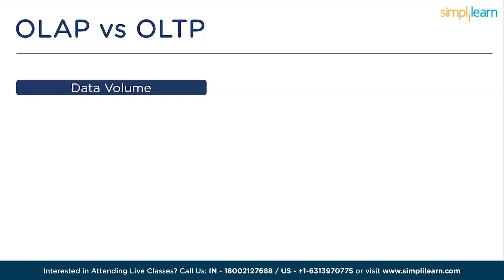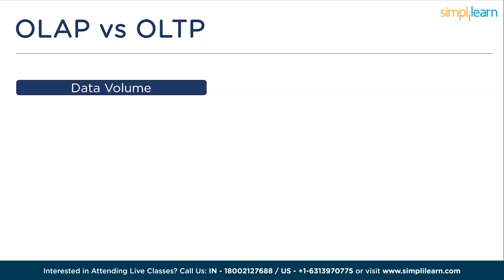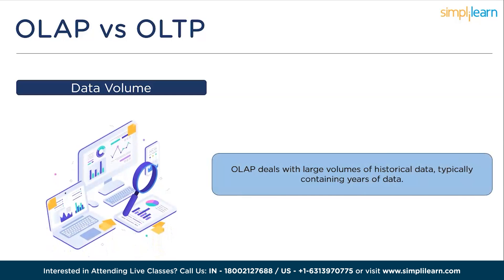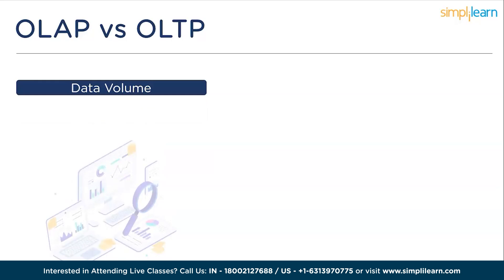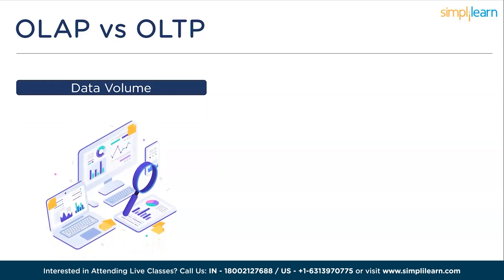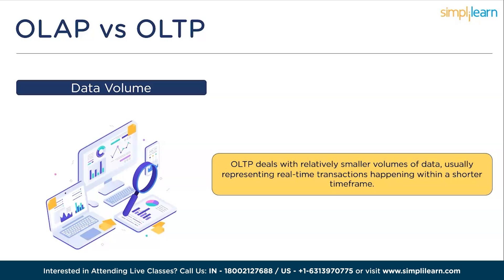Next, we have data volume. OLAP deals with large volumes of historical data, typically containing years of data, and focuses on analyzing and summarizing this vast amount of information. OLTP deals with relatively smaller volumes of data, usually representing real-time transactions happening within a shorter time frame.